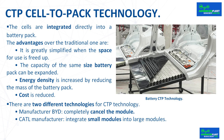Compared with traditional battery packs, the volume utilization rate of CTP battery packs increases by 15–20%. The number of battery pack components is reduced by 40%, production efficiency is increased by 50%, and the energy density can reach more than 200 watt-hours per kilogram. There are two different approaches: manufacturer BYD completely cancels the module, while CATL integrates small modules into large modules.